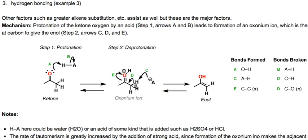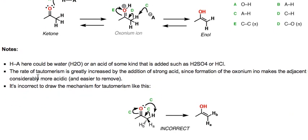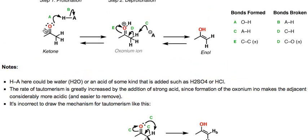By protonating the oxygen, we actually make this carbon a lot more acidic than it normally would be. The reverse of this reaction would have the double bond attacking HA, being protonated, and then deprotonating it back to give the neutral ketone. It would happen exactly in reverse as it did in the forward case. HA here could be water or some other kind of acid that's added, such as sulfuric acid or HCl. The rate of this tautomerism is greatly increased as you add strong acid, since you're going to increase the acidity of the alpha carbon when you protonate the oxygen.